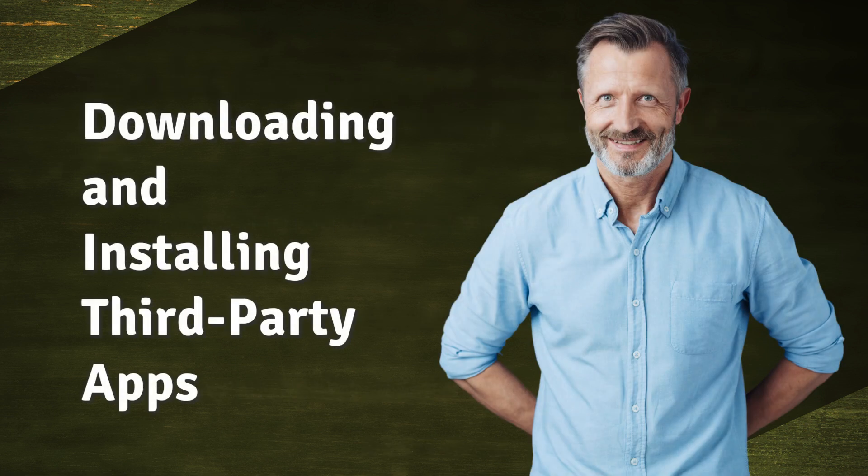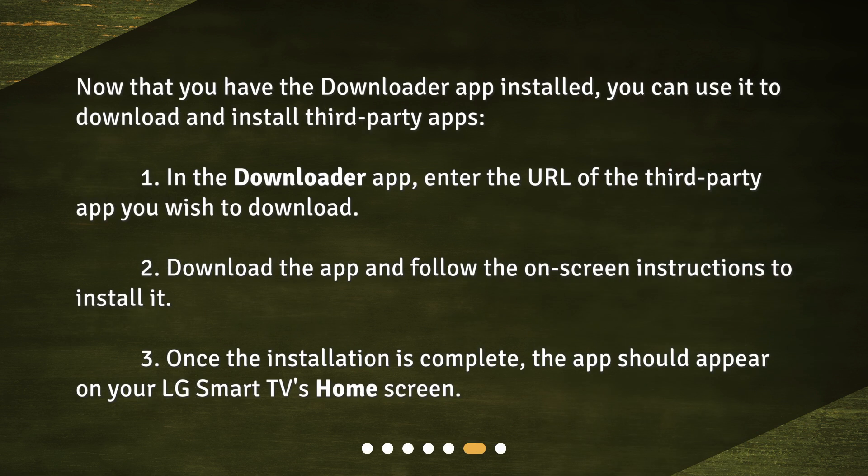Downloading and installing third-party apps. Now that you have the Downloader app installed, you can use it to download and install third-party apps. 1. In the Downloader app, enter the URL of the third-party app you wish to download. 2. Download the app and follow the on-screen instructions to install it. 3. Once the installation is complete, the app should appear on your LG Smart TV's home screen.